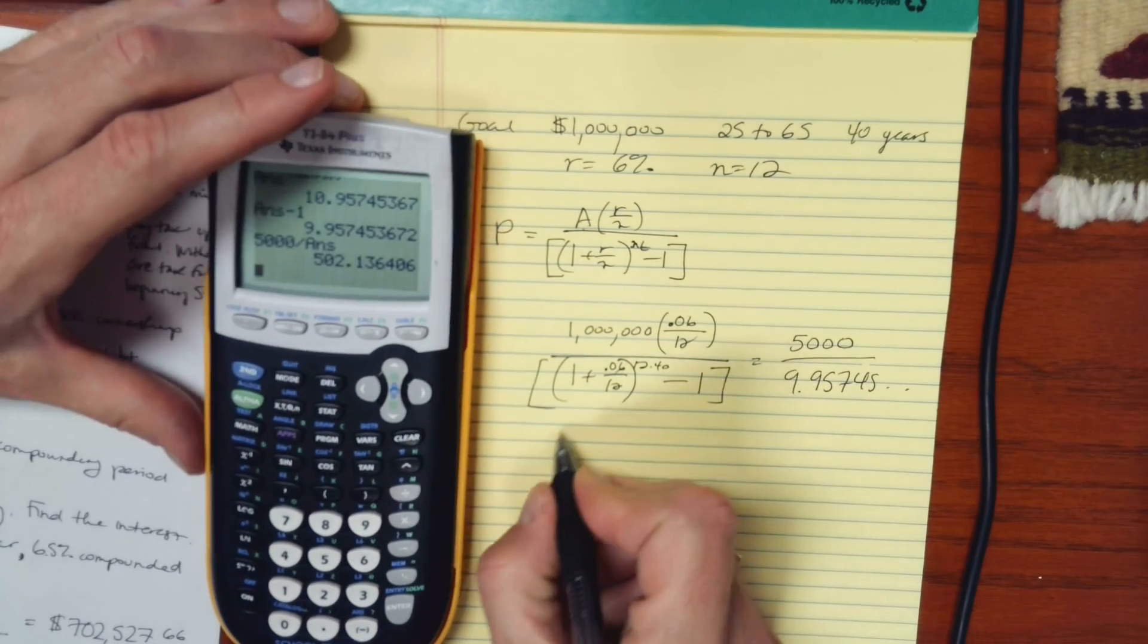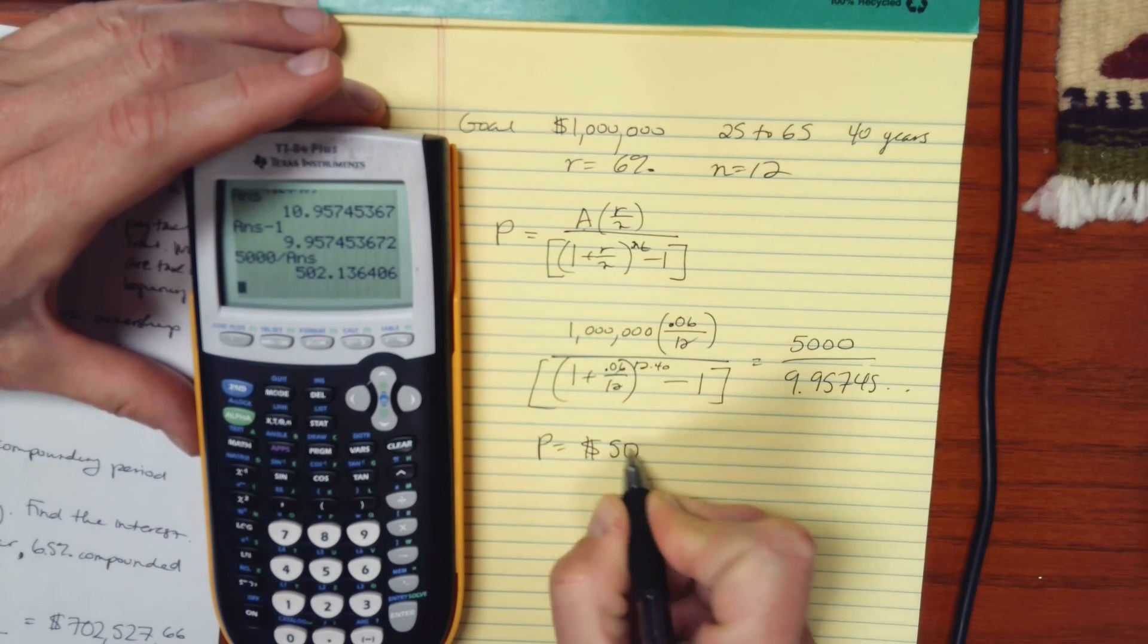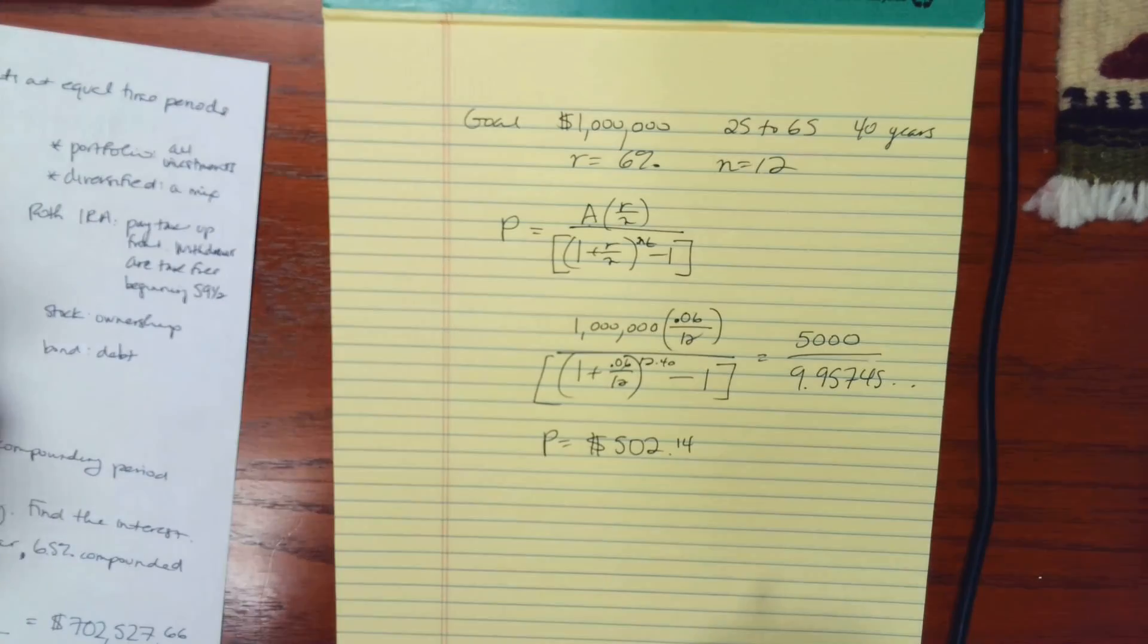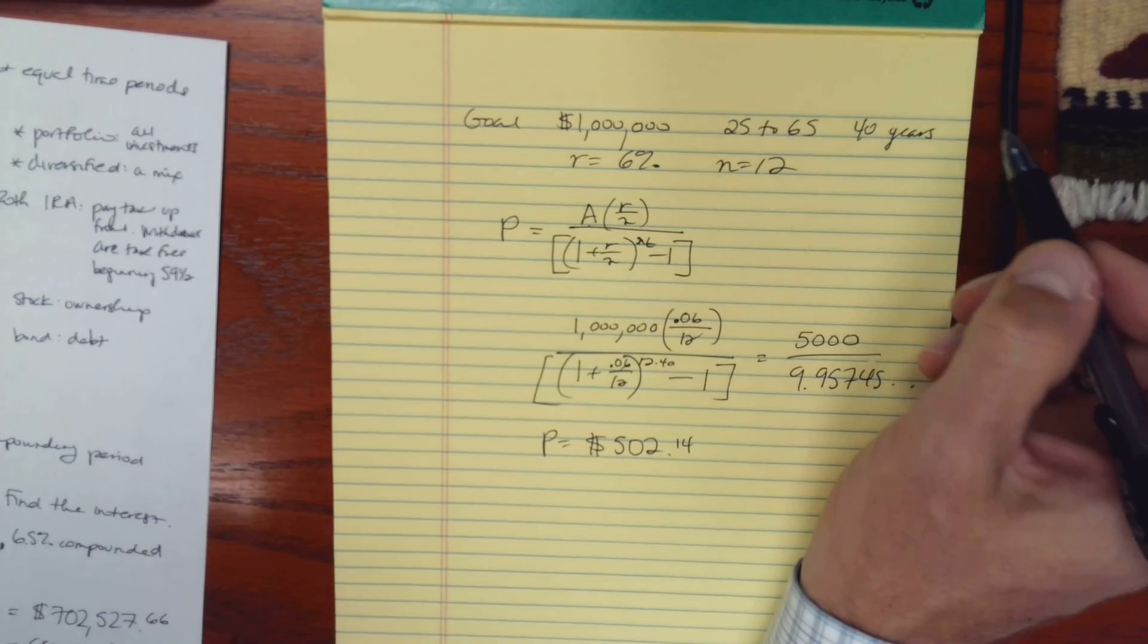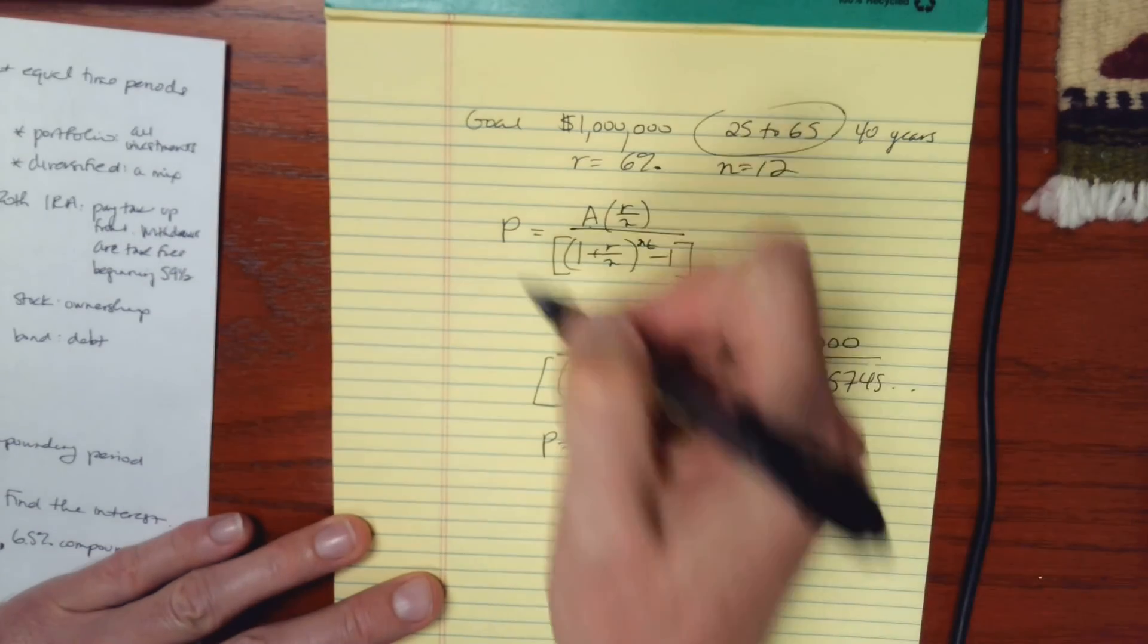And I find that I need to set aside $502.14 a month. And if I do that for 40 years, when I'm ready to retire, I'll have a nest egg of about a million dollars.